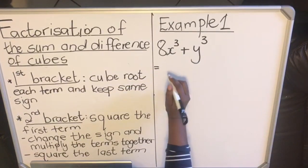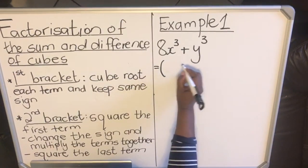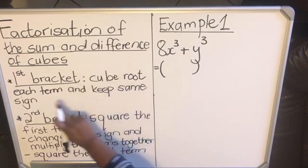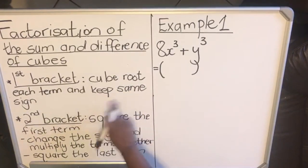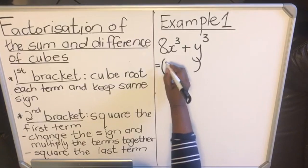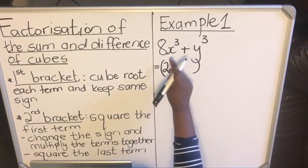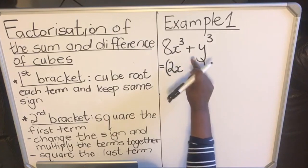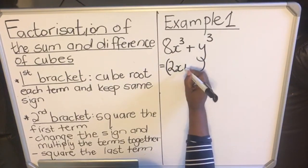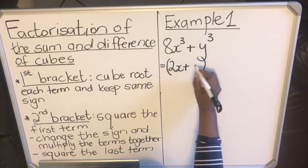When you have two cubes together like that, you start with the first bracket. In the first bracket they say cube root each term and keep the same sign. So you're going to cube root this term - the cube root of 8 is 2, the cube root of x³ is x. Then when they say keep the same sign, they mean the sign that you have with the cubes - it's plus. The cube root of y³ is y.